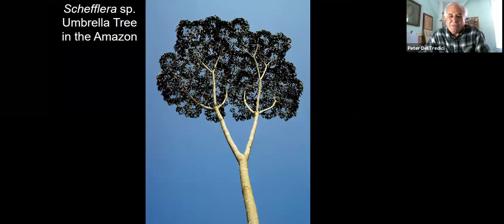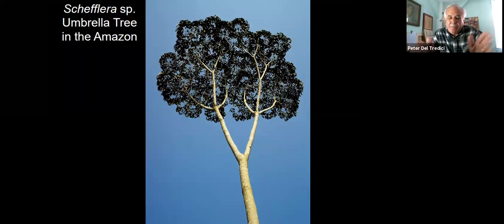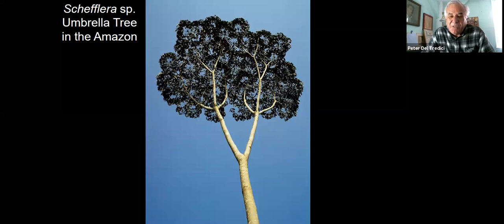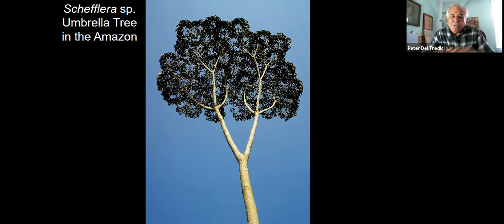This whole concept of tree architecture — this is an example of a Shefflera tree in the Amazon basin. You see how the tree grew up, produced a single stem, and then it branched. Right at that point where it branched, it produced a flower, which represented the end of a particular growing point, and then it branched below the flower. Then it produced another flower at either end of those two branches, which caused more branching, and that process just kept getting repeated.